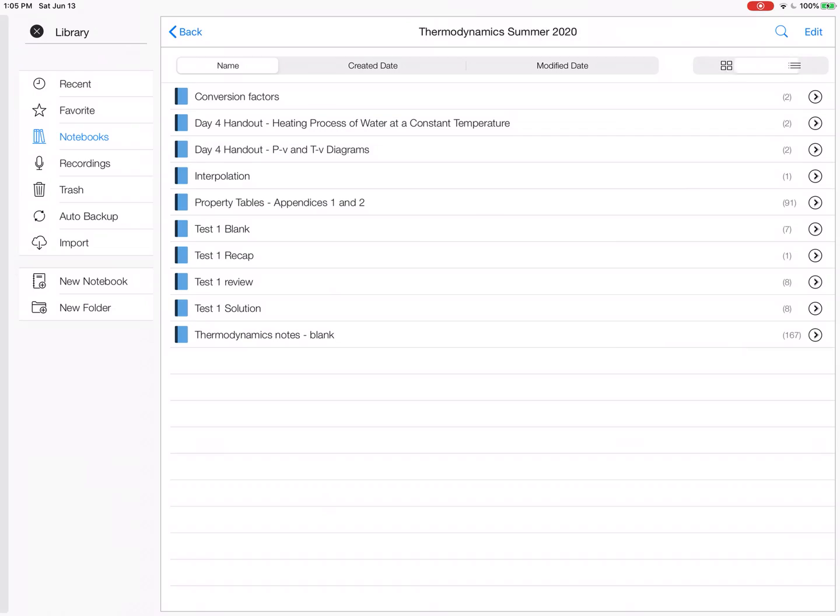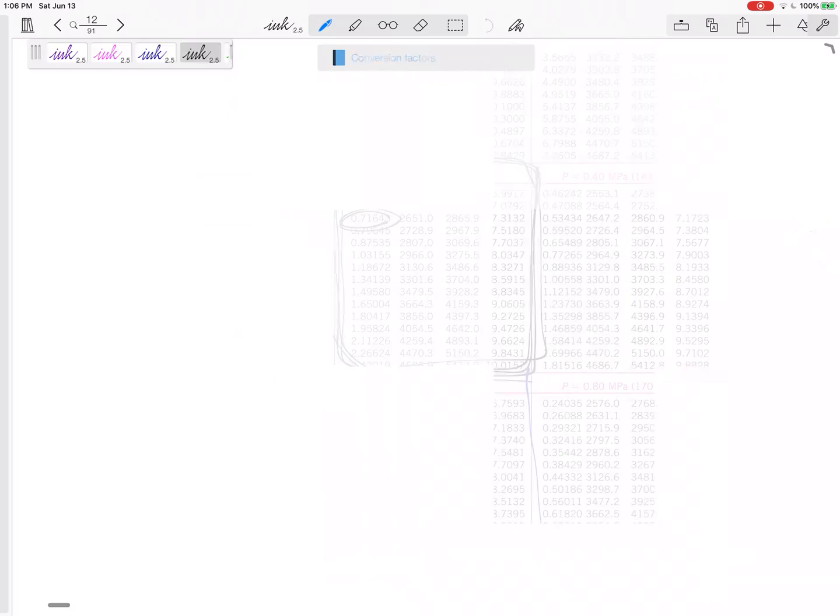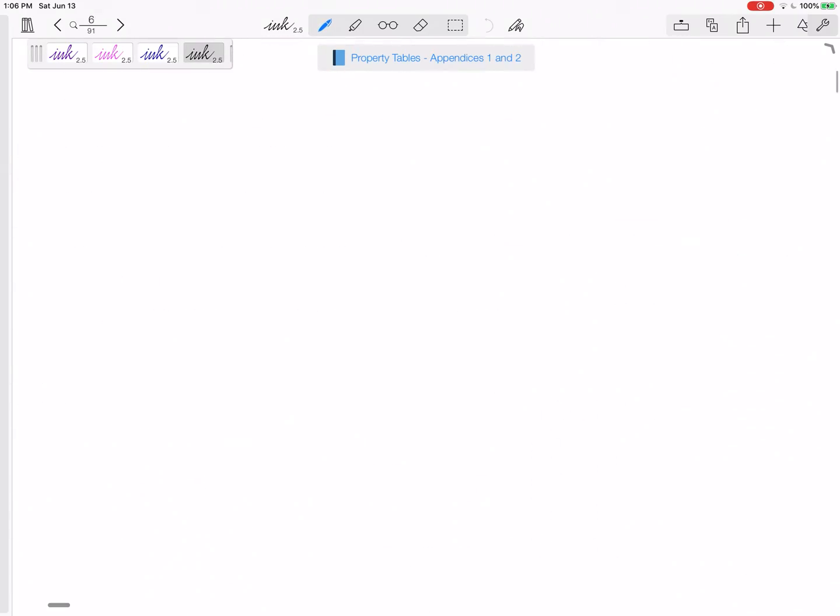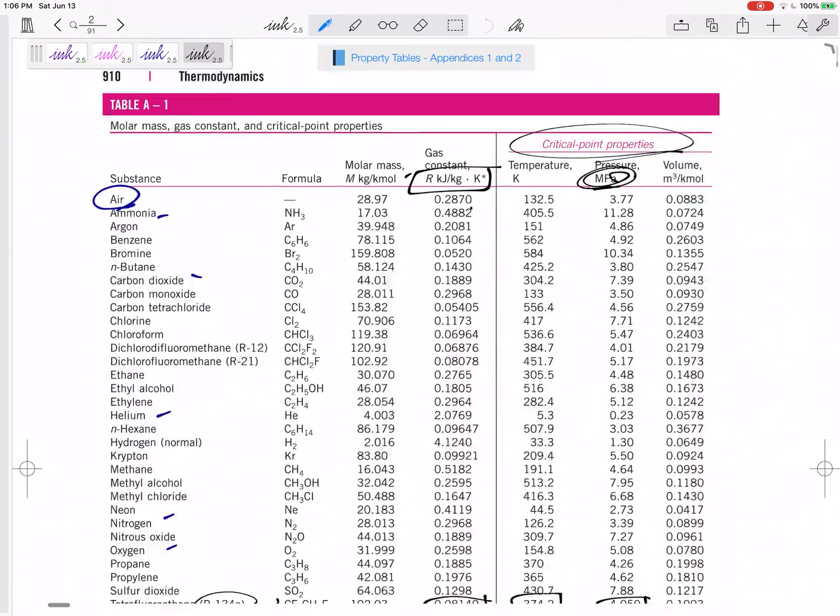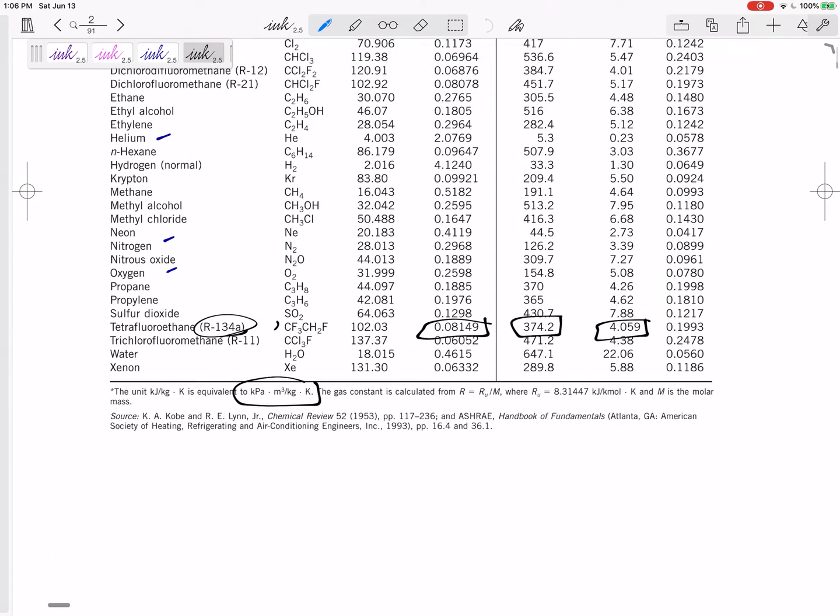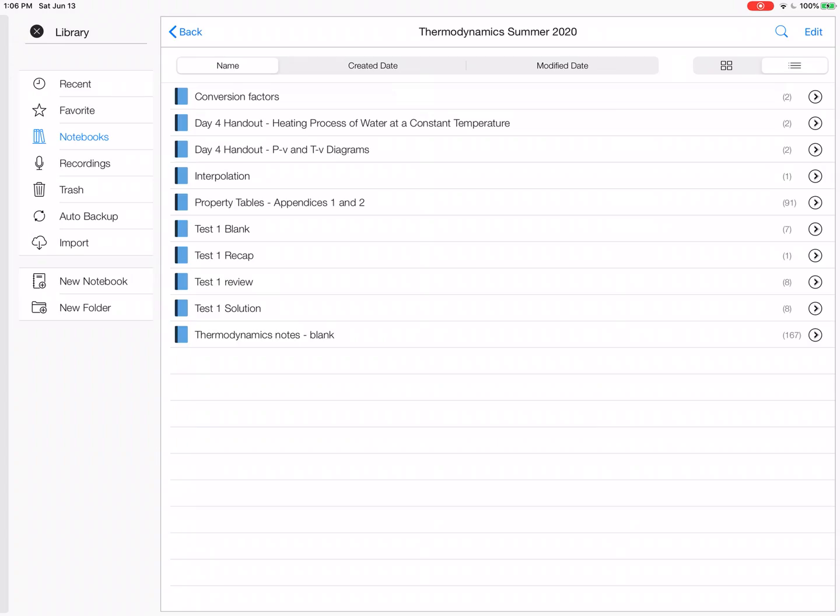It's probably on the conversion factor sheet. I think it's also in the property tables. Sorry, going on a tangent. If kilojoule per kilogram K equals kPa meter cubed, that's really telling me kPa meter cubed is a kilojoule. So there we go, that is the boundary work.